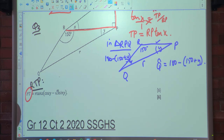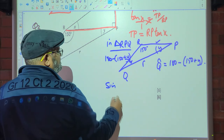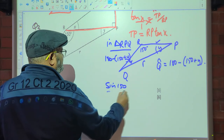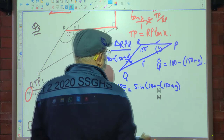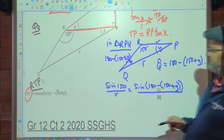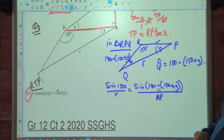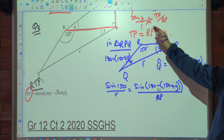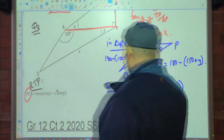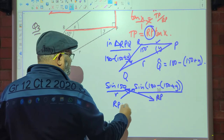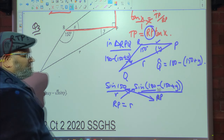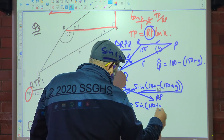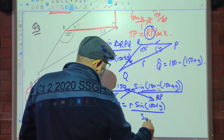Applying the sine rule: sin(150°)/r = sin(180° − (150° + y)) / RP. Making RP the subject: RP = r·sin(180° − (150° + y)) / sin(150°). In the second quadrant, sine is positive, so sin(180° − (150° + y)) = sin(150° + y).